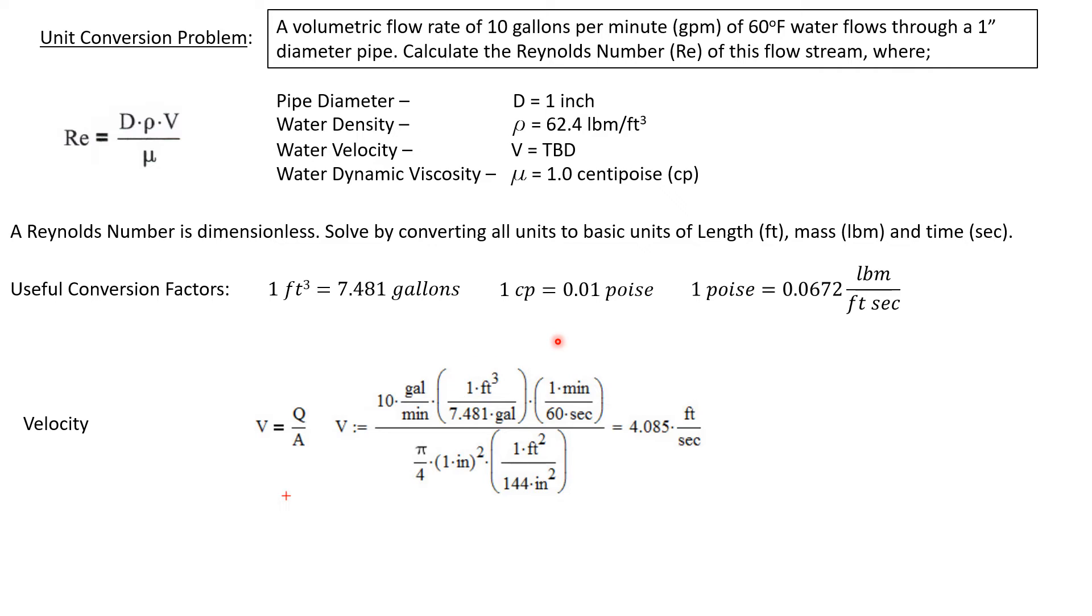So this first conversion factor is the equivalent of one. The numerator and denominator are equivalent. One cubic foot is equivalent to 7.481 gallons. And of course one minute is equivalent to 60 seconds.